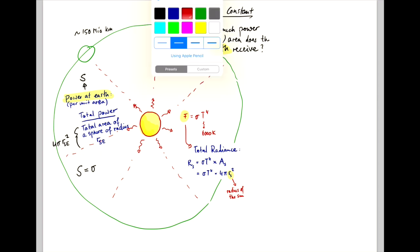So S just becomes sigma T to the 4 times radius of the Sun divided by radius of the Earth's orbit squared. So we know the numbers needed to calculate S. T is about 6000 Kelvin. The radius of the Sun is about 0.7 million kilometers. And the radius of the Earth's orbit is about 150 million kilometers.